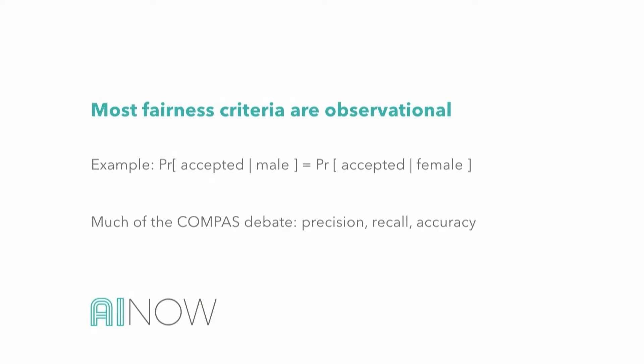This covers most of what we discuss — for example, the COMPAS debate that was ongoing last year: everything said there is essentially an observational property. Things like false positive rates by different groups, precision, recall, accuracy — if you look at all these classification measures by group, that's an observational criterion.